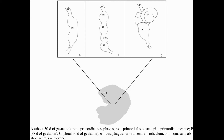From the lesser curvature of this primitive stomach, omasum and the esophageal groove first evolve. Then the body of the primitive stomach enlarges and forms rumen and reticulum. After the formation of rumen and reticulum, the caudal part of this primitive stomach gives rise to the abomasum.